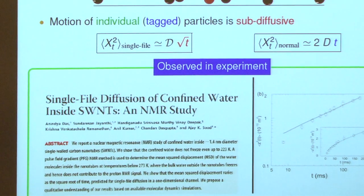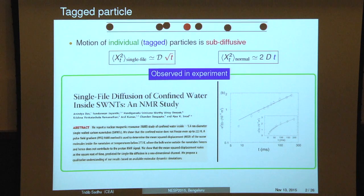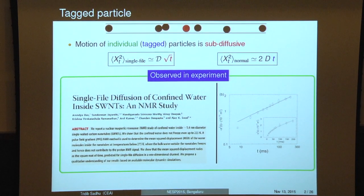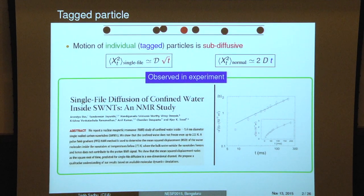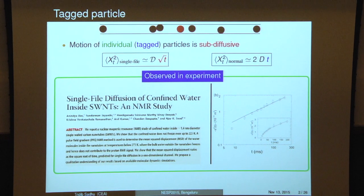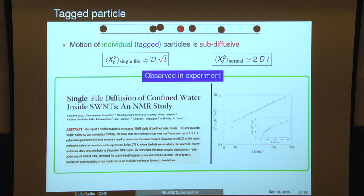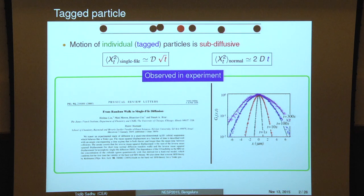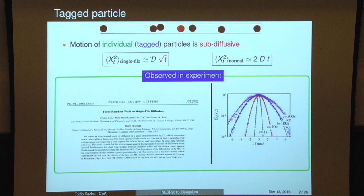The major interest comes from the fact that if you look at motion of one tagged particle, the motion is sub-diffusive, which means the variance of the displacement grows as square root of t as opposed to linearly with t in normal diffusion. This has been found recently in many experiments. One experiment done in Bangalore at the Institute of Science looked at motion of water molecules inside carbon nanotubes and found sub-diffusive behavior. Other experiments on colloidal particles inside narrow channels also found sub-diffusive behavior of the tagged particle.